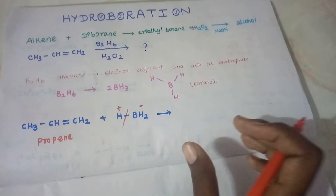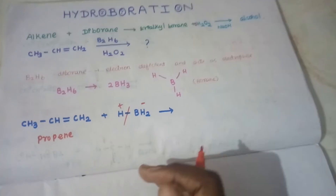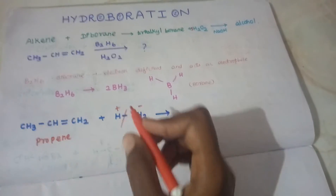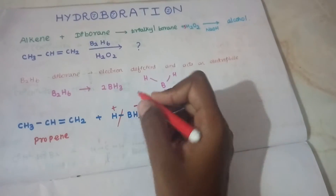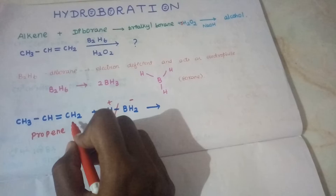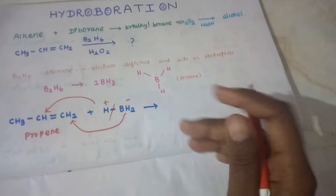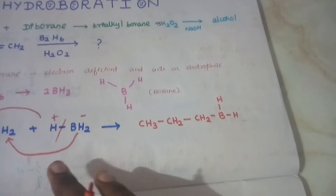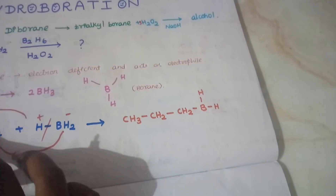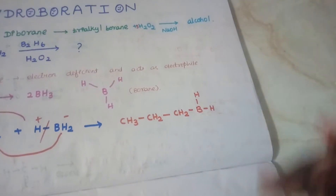According to anti-Markovnikov's rule, the negative part — boron — attaches to the less substituted carbon. At the top carbon we have hydrogen. So boron attaches to that carbon, H+ attaches to the other carbon. The product shows CH2 bonded to BH2, completing the four bonds on carbon.